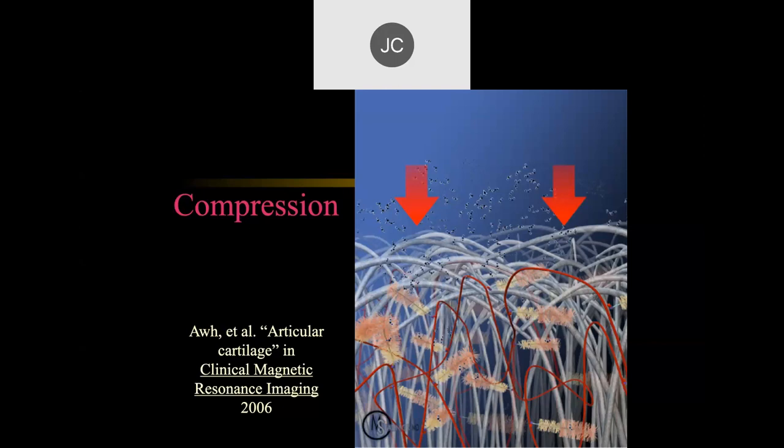That happens because the diffusion of molecules into the cartilage is a very slow process if you don't have this pumping mechanism by compressing and releasing the articular cartilage. Within the collagen fibers here are chondrocytes, which create the biochemical elements that are important for maintaining the structure of the cartilage.